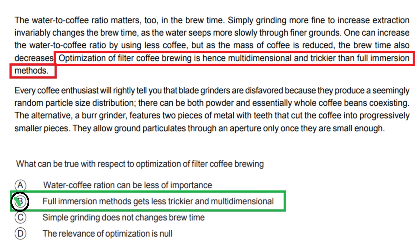In conclusion, after re-evaluating the options, option B is correct because it aligns with the statement in the paragraph that filter coffee brewing optimization is trickier and more multidimensional compared to full immersion methods. The other options are incorrect because they do not accurately reflect the information provided in the paragraph.